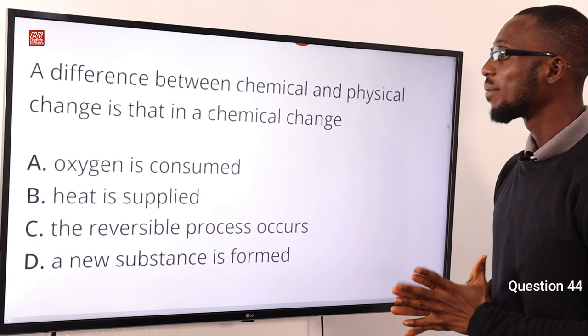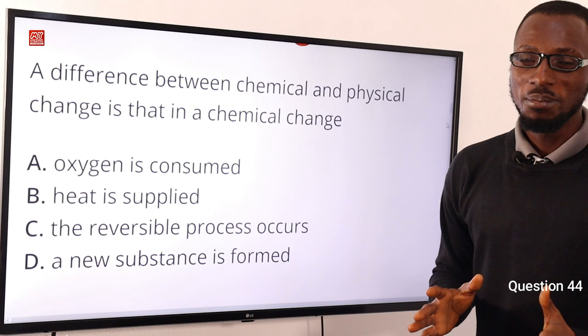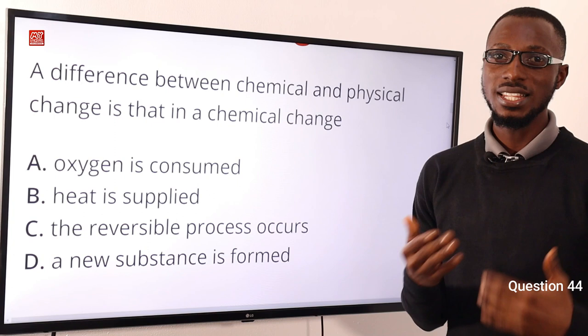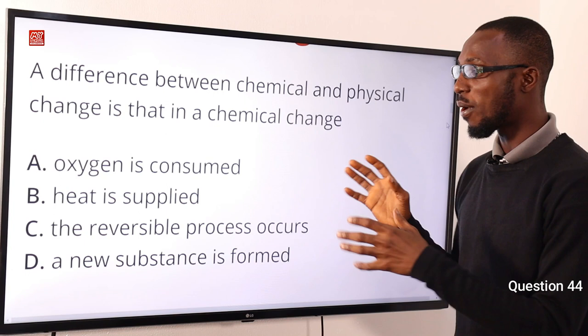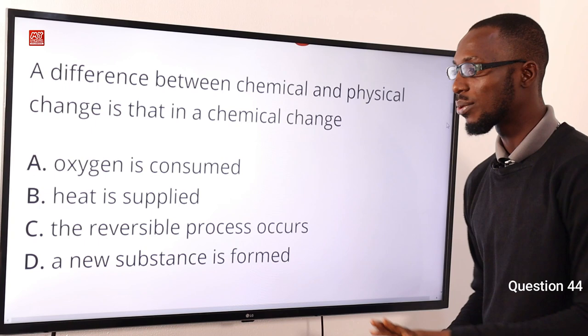Question 44: A difference between chemical and physical change is that in a chemical change, a new substance is formed and it is not reversible. A physical change is reversible and no new substance is formed. According to the options provided, the correct difference is that a new substance is formed in a chemical change. The correct option is option D.